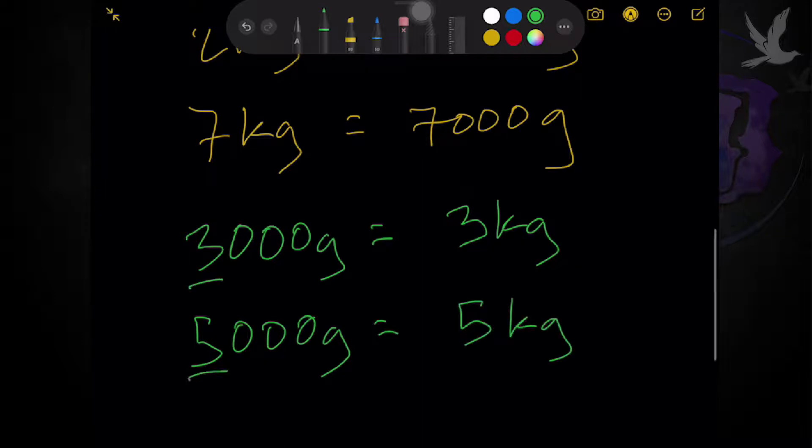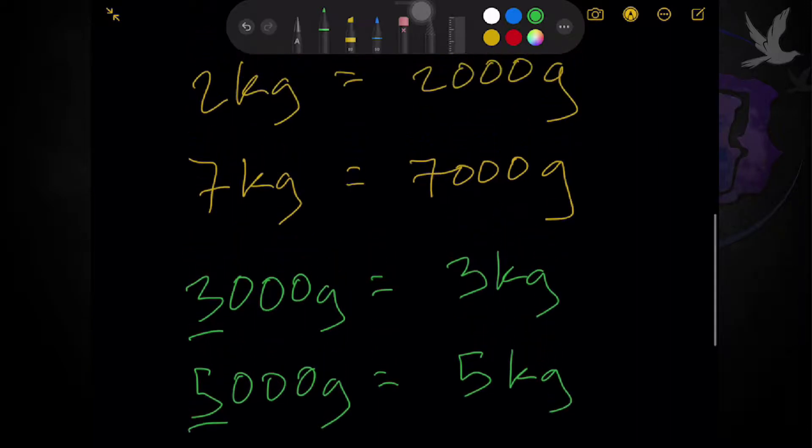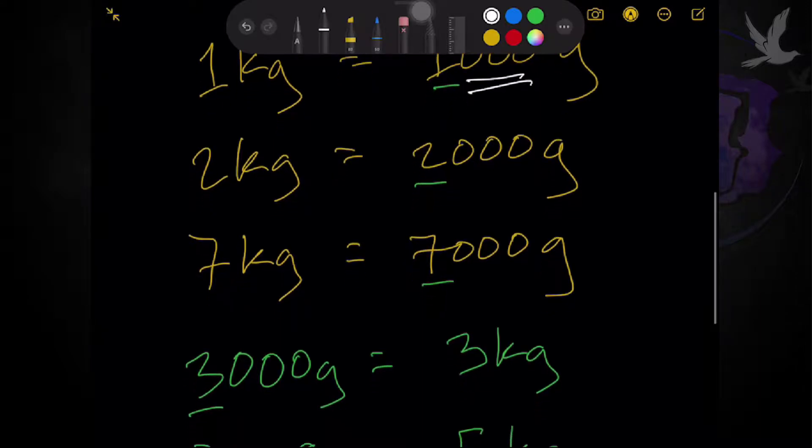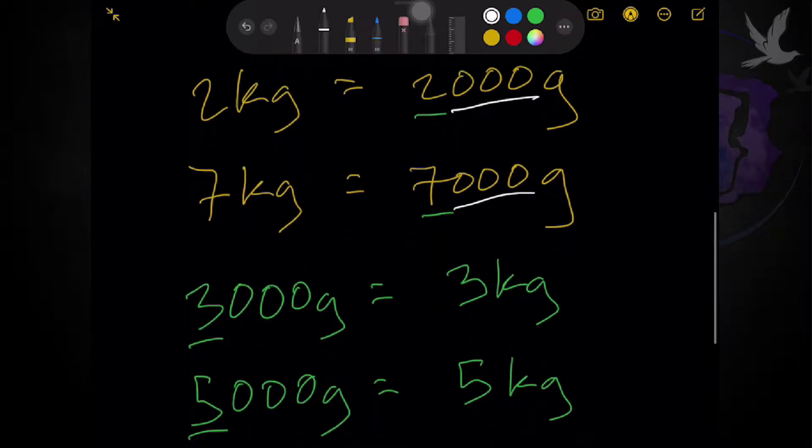And again, if you notice, we are just basically copying the first unit and moving 3 decimal places. 3 place values na naman ang ginagalaw natin dito. Just like the kilometers and meters and the other way around, meters to kilometers.